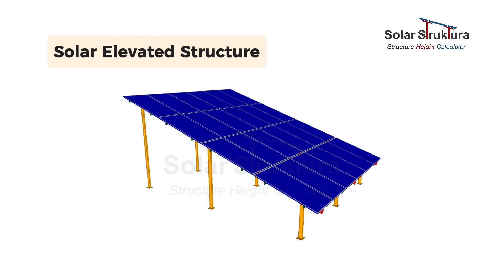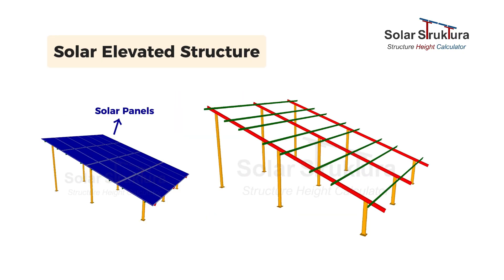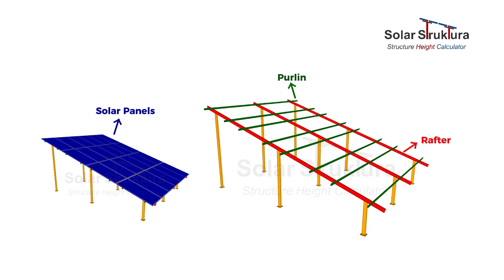This is a Solar Elevated or RISP Solar Structure. The top of this is the Solar panels, which are mounted on the purlins. The rafters connect the poles to each other. The bottom of this structure has the vertical columns.